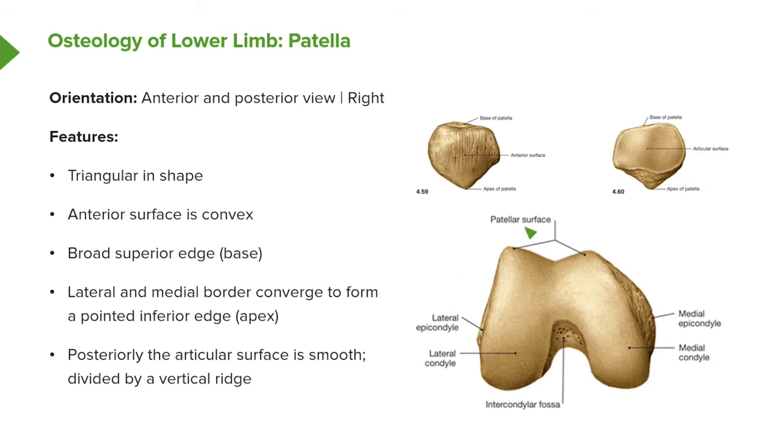Posteriorly, the articular surface is smooth and it's divided by a vertical ridge, which allows it to sit in the patellar surface of the distal femur.